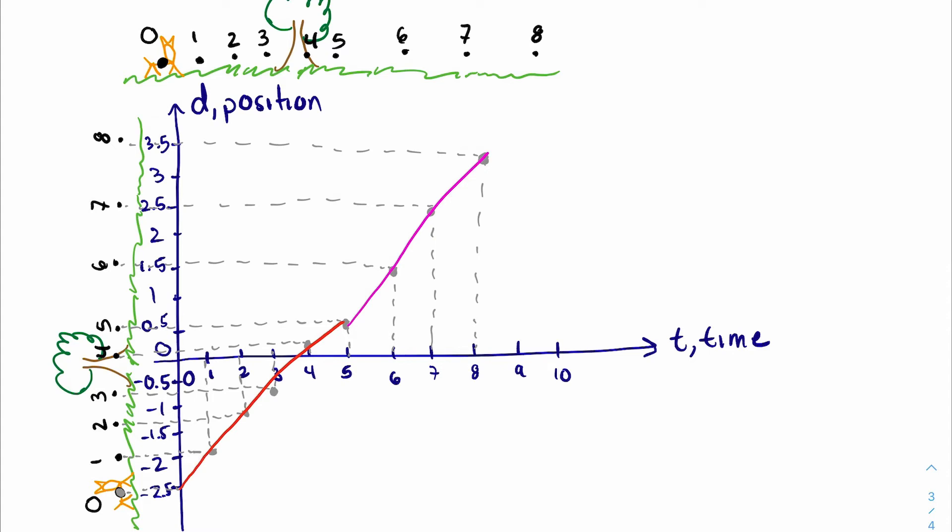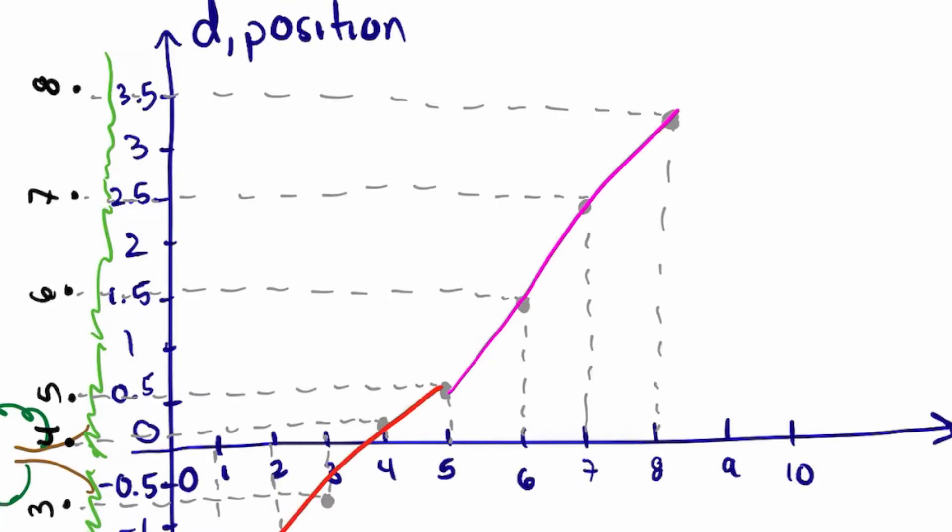So notice that these two, they're both linear relationships, but the steepness of it varies here. Where, as we saw before, the steepness tells you how much distance is covering the same amount of time. So here, in 1 second, we're covering 1 meter. From 6 to 7, 1 second, it's covering 1 meter. From 7 to 8, it's covering 1 meter.